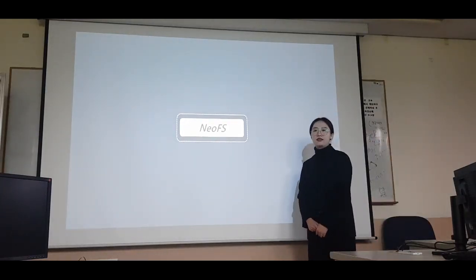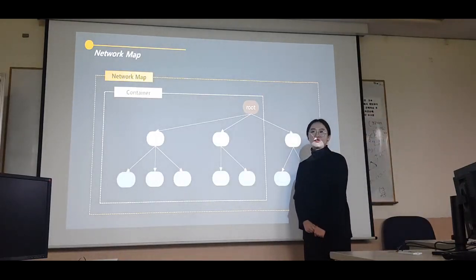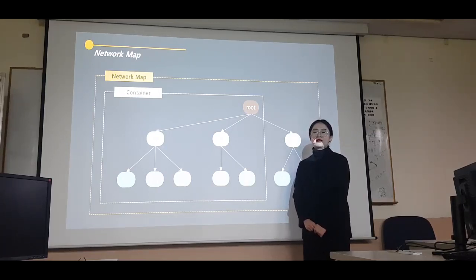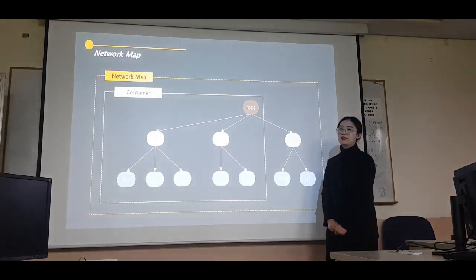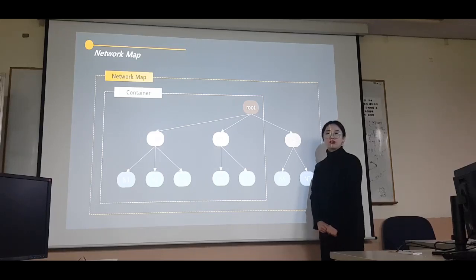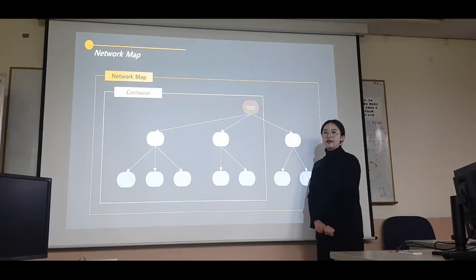Next is NeoFS. NeoFS uses a network map to place and store files specifically. Each node has properties, forming a multi-dimensional graph where nodes are grouped according to their attributes. Nodes have properties such as location and storage capacity. Network maps allow you to find a repository that can automatically save files.